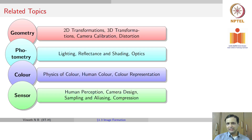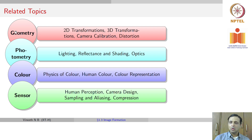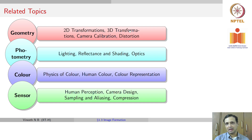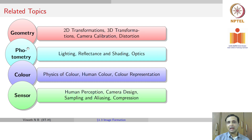To study all of these, one would probably need to study this from a geometrical perspective, where you study 2D transformations, 3D transformations, camera calibration, and distortion. From a photometric perspective, where you study lighting, reflectance, shading, optics, and so on.